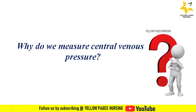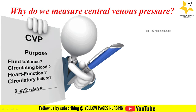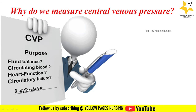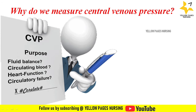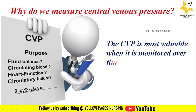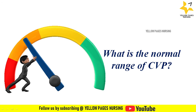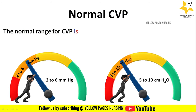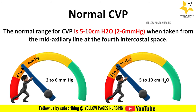Why do we measure central venous pressure? The purpose of monitoring CVP includes: to serve as a guide of fluid balance in critically ill patients, to estimate the circulating blood volume, to determine the function of the right side of the heart, and to assist in monitoring circulatory failure. CVP is most valuable when monitored over time and correlated with the patient's clinical status. The normal range for central venous pressure is 5–10 cmH₂O or 2–6 mmHg, when taken from the mid-axillary line at the 4th intercostal space.